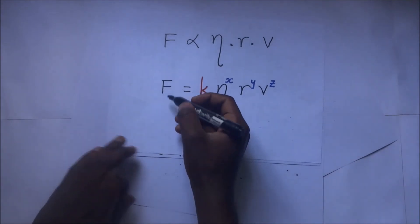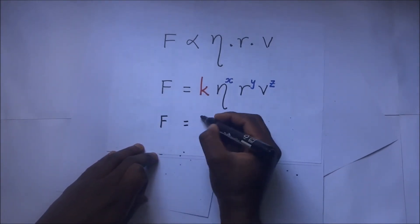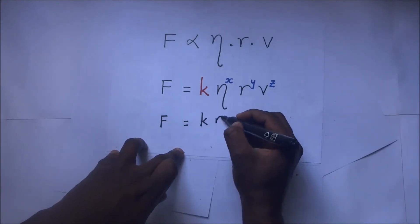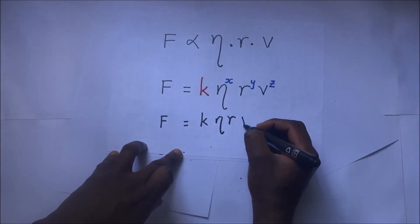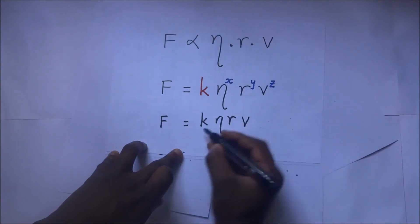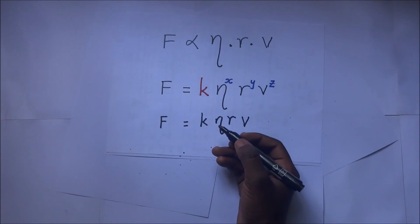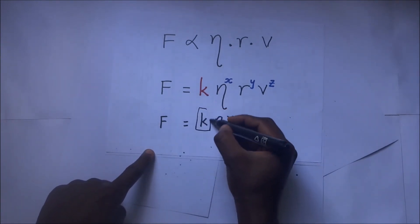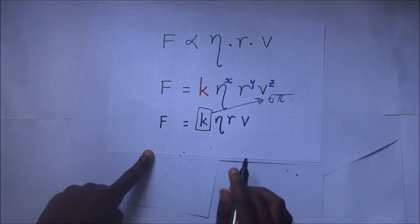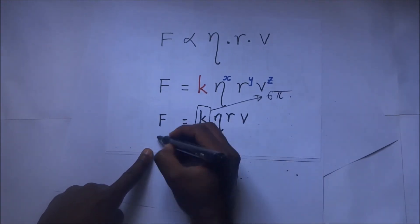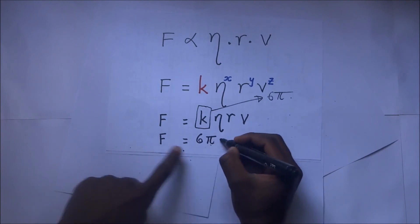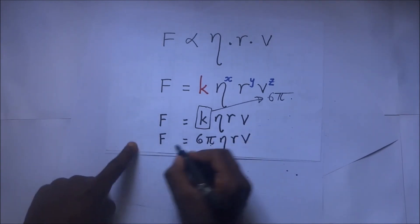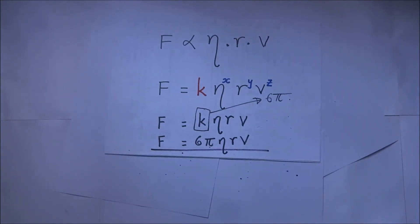With all indices equal to 1, the expression becomes: the viscous drag F = k × η¹ × R¹ × V¹. According to experimental observations, the value of k was found to be 6π. Therefore, F = 6π·η·R·v. This is Stokes' Law.